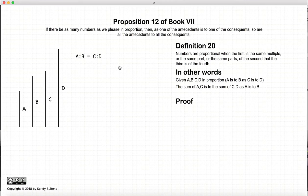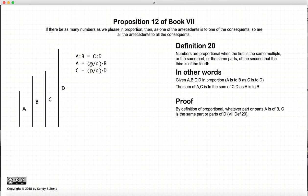So to prove this, first off, by definition, if a, b, c, and d are proportional, then a is some fractions of b, and c is the same fractions of d.